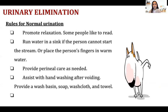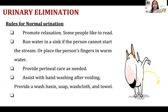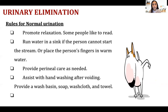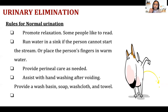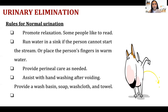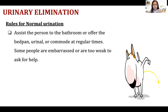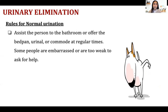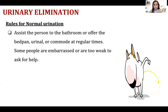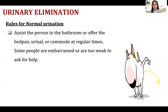Provide perineal care as needed. If your patient is incontinent — meaning they cannot control urination — you need to provide regular perineal care to prevent infection and skin problems. Assist with hand washing after voiding as basic infection control. Also, offer the bedpan, urinal, or commode at regular times, since some people are too embarrassed or weak to ask for help. You should anticipate their needs and always offer assistance.